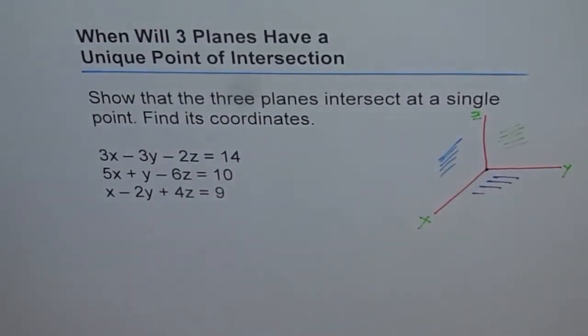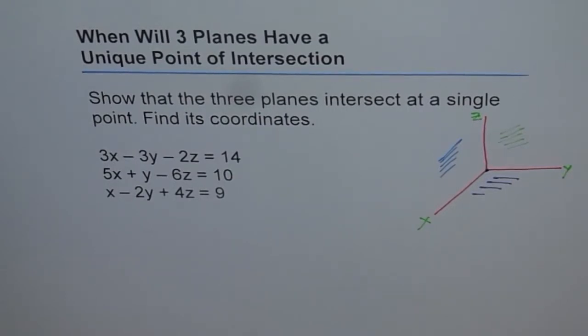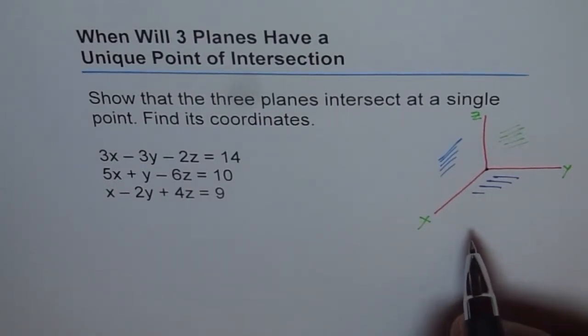And what is important to note here is that their normals are not coplanar. Their normals are not coplanar, and that is the primary condition. If the normals are not coplanar, then the planes intersect at a single point, if they at all intersect.